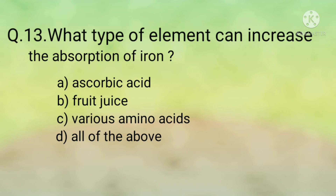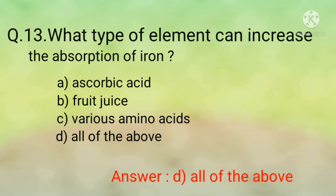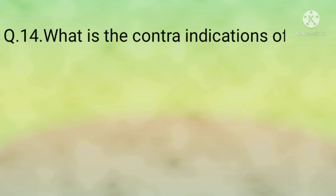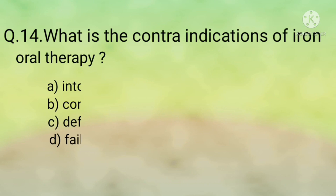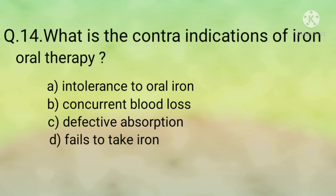Question number thirteen: What type of element can increase the absorption of iron? Options are: option A, ascorbic acid; option B, fruit juice; option C, various amino acids; option D, all of the above. The correct option is option D, all of the above.